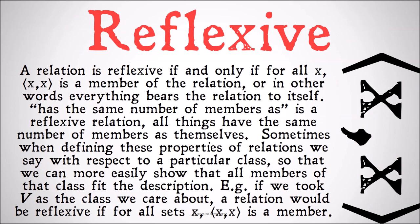A relation is reflexive if and only if for all x, xx is a member — in other words, everything bears the relation to itself. 'Has the same number of members as' is a reflexive relation. All things, all classes, have the same number of members as themselves.